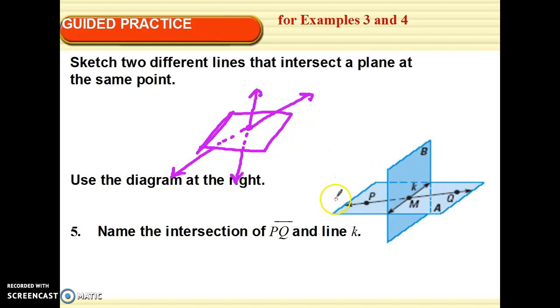Name the intersection of line PQ and line K. Line PQ is intersecting line K where? Where is line PQ intersecting line K? Point M. We both have a point M. Do you guys see how these two lines are intersecting at point M?